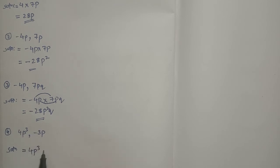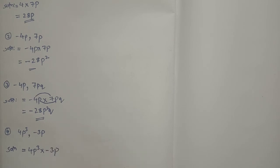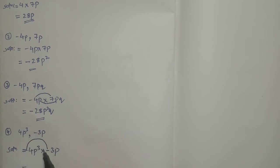Fourth question, solution: 4p³ into -3p. First multiply the sign. Plus into minus is minus. If sign is not mentioned, sign is plus. That is minus. Plus into minus is minus.